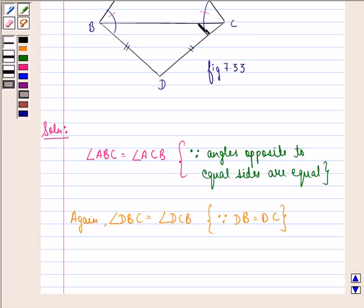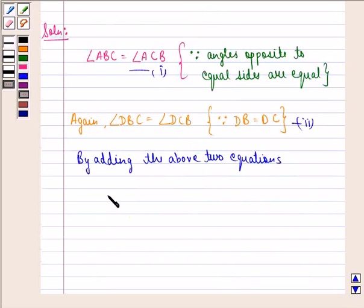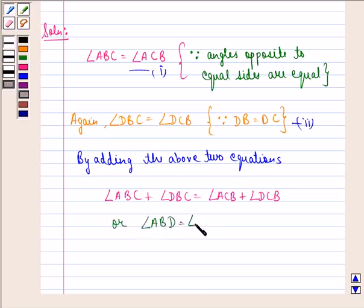Now by adding the above two equations, this is equation 1 and this is equation 2, we get angle ABC plus angle DBC is equal to angle ACB plus angle DCB, or angle ABD is equal to angle ACD.